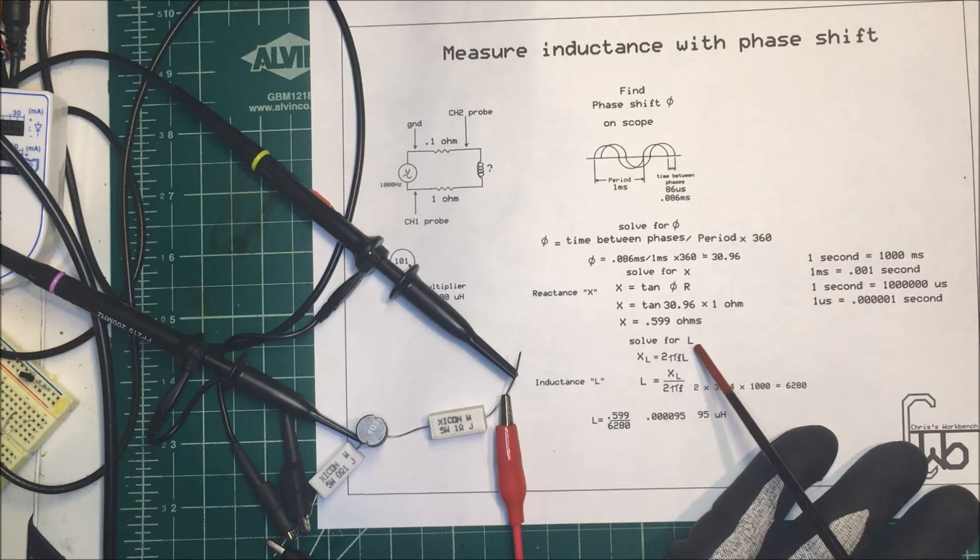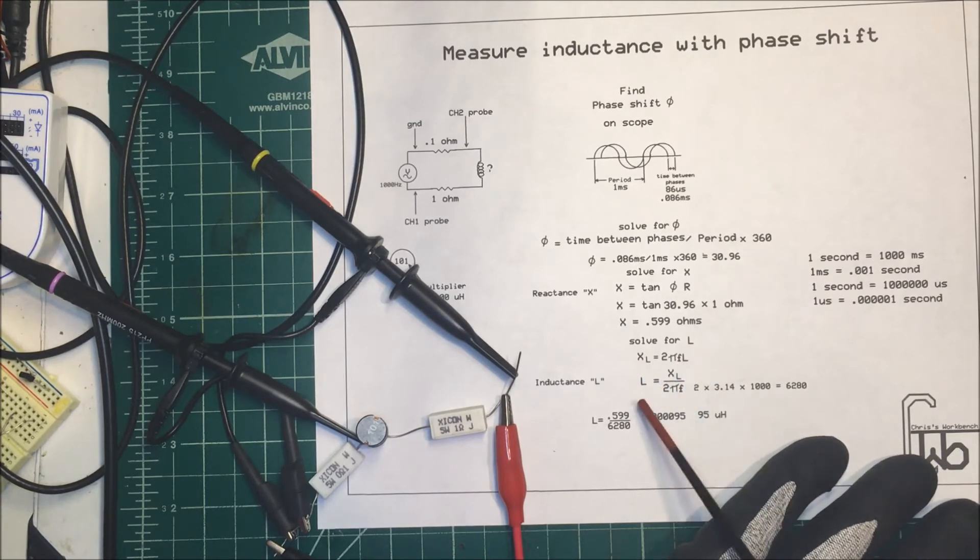Now we want to solve for L, our inductance. We know that the inductive reactance is equal to 2π times the frequency times the inductance. We massage that around a little bit, so our L is going to be equal to our inductive reactance divided by 2π times the frequency. 2π times the frequency is 6280, and we divide that into our 0.599 ohms.